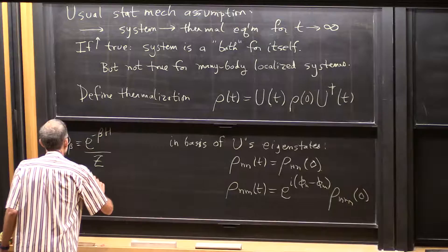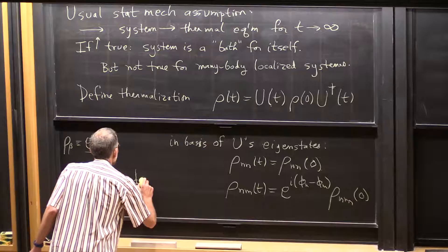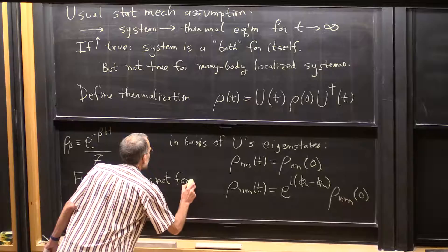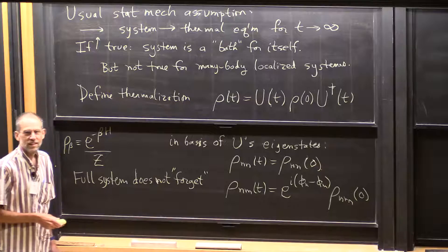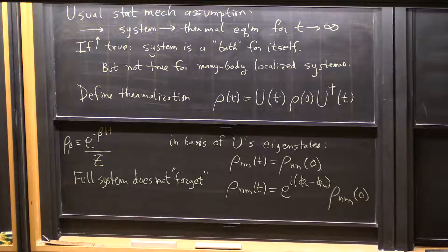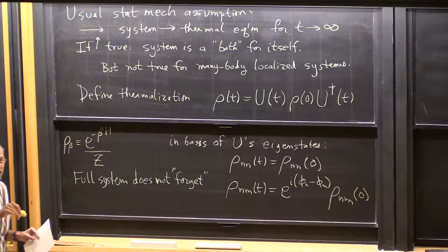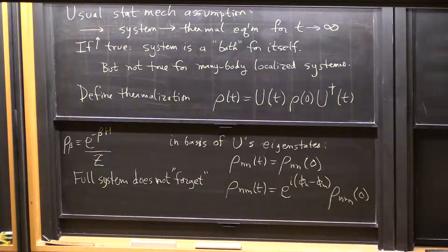So the conclusion is: the full system does not forget anything about its initial state. All information in the initial state is still in the system. Typical quantum dynamics takes the information in the initial state and hides it — it takes information which might be easily accessible and puts it in operators involving many, many degrees of freedom, so that information is hidden. It's not gone, it's just hidden. That's what quantum dynamics does in closed systems.